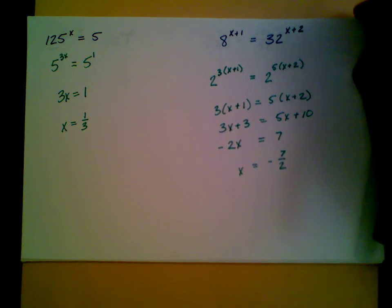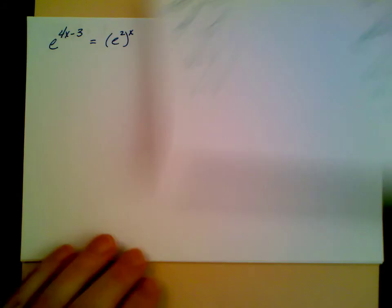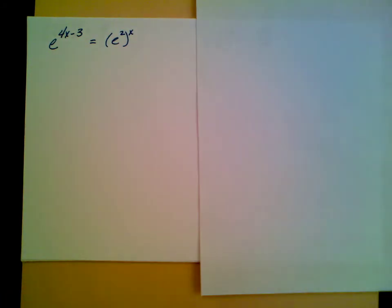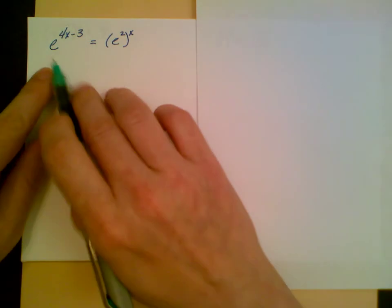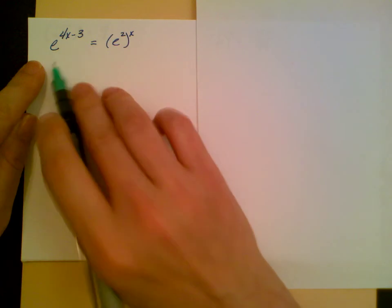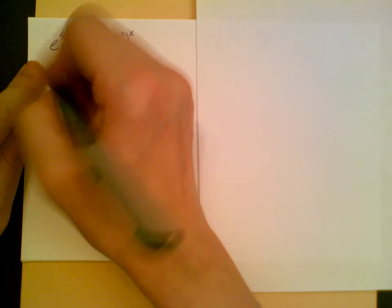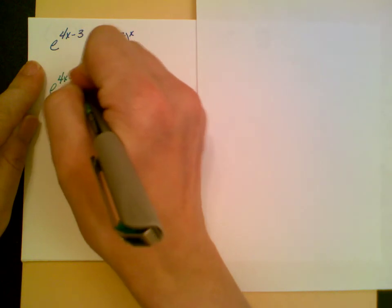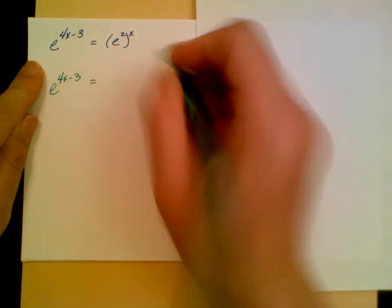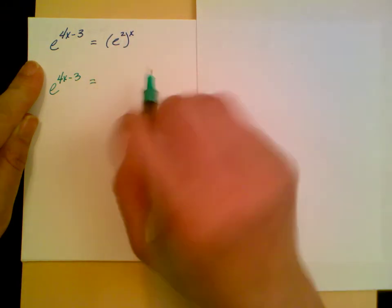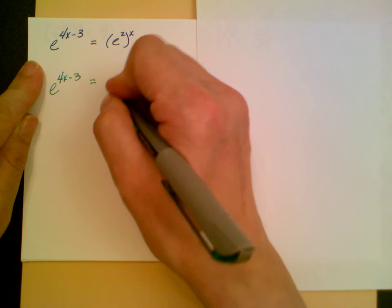Let's do another one. Remember that e is that number that's approximately 2.7. You will need to remember that e is approximately 2.7. My first step, I'm going to remember something in exponential notation raised to another exponent. I multiply the exponents together.